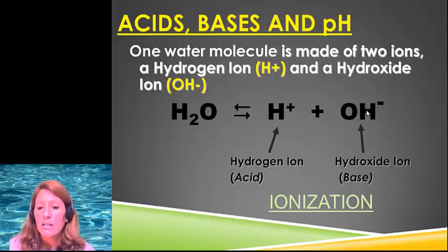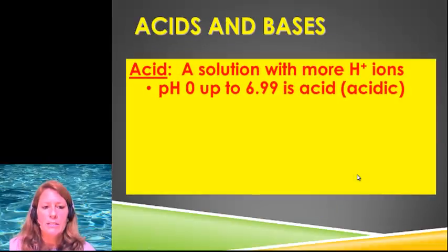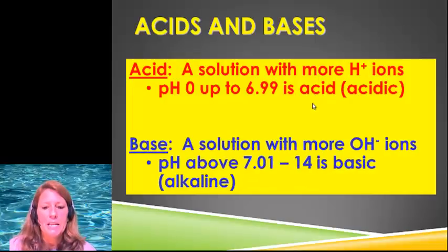And we're going to do this in lab actually, okay. So what are acids and bases? By definition, an acid is anything that has more hydrogen ions, and the scale goes from zero up to 6.99. I put that on there going out to the nearest hundredth because our probes read that high. So that would make it an acid or acidic. A base, it has more hydroxide ions. So it's anything above 7.01 to 14, it's basic, it's also called alkaline.